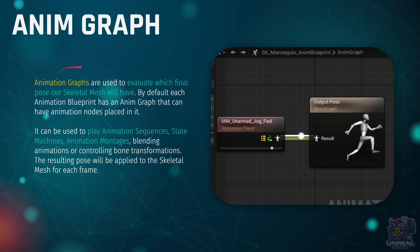Next up we have the Anim Graph, which is going to evaluate which final pose the skeletal mesh is going to have. By default, the Animation Blueprint is going to have an Anim Graph and an Event Graph. This Anim Graph can be used in tandem with animation sequences, state machines, animation montages, blending like blend spaces, and so on. With that, we are going to control the final pose that the skeletal mesh is going to have for each frame.